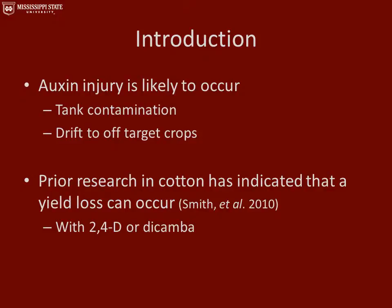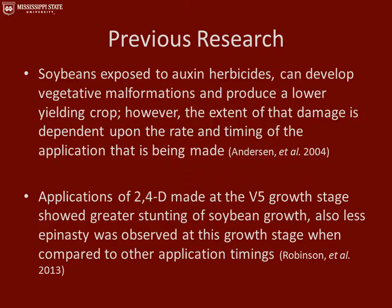Some prior research has been conducted at Mississippi State University in cotton that has indicated that a yield loss can occur from 2,4-D or dicamba. Previous research has also indicated that soybeans exposed to auxin herbicides can develop vegetative malformations and produce a lower yielding crop. However, the extent of that damage is dependent upon the rate and timing of the application. It has also been suggested that applications of 2,4-D made at the V5 growth stage showed greater stunting in soybean growth, and less epinasty was observed at this growth stage when compared to other application timings.